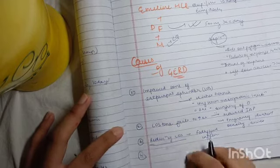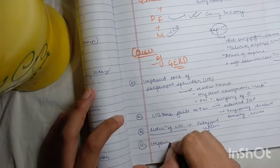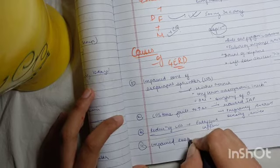Then the fourth factor you need to remember is when there is impaired esophageal mucosal resistance.